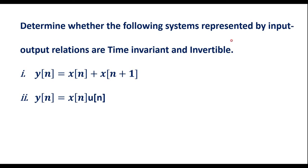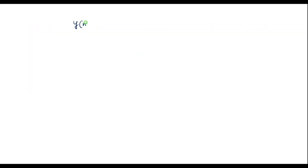Determine whether the following systems represented by input-output relations are time invariant and invertible. Here two systems are given, and we are supposed to verify whether the systems are time invariant and invertible. Let me consider the first example: y of n is equal to x of n plus x of n minus 1.